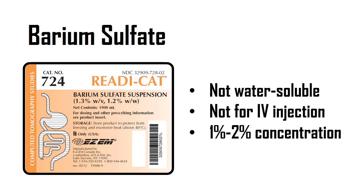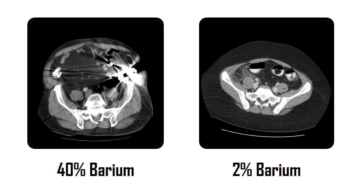We should also understand that barium sulfate used for CT is significantly less concentrated than barium sulfate used for fluoroscopic imaging — they are not interchangeable. Barium sulfate for CT imaging has a concentration between 1% and 2%. The patient in the image to the left was scanned shortly after receiving a fluoroscopy procedure that used 40% barium. That barium was so dense it caused significant beam hardening artifact — the appearance of streaking throughout the image. Compare this to the image on the right, where the patient received the appropriate 2% barium for CT imaging. We can still see the contrast in the bowels, but it's not so dense that it causes artifact.